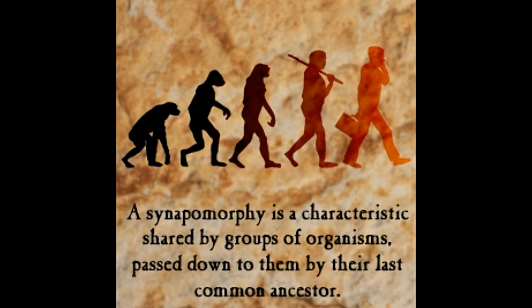The concept of synapomorphy explains why we are more closely related to animals than we think. But what is a synapomorphy? Did you know the fact that we can move and bend our thumbs, while most animals can't, is a synapomorphy we share with chimpanzees, monkeys, and other primates.